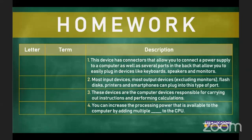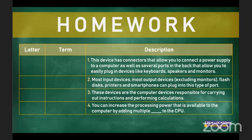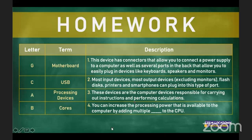Number 3: these devices are computer devices responsible for carrying out instructions and performing calculations. I just went through this at the beginning of the lesson — they would be processing devices. The answer is A, processing devices. Number 4: you can increase the processing power available to the computer by adding multiple cores to the CPU. The answer is B — adding multiple cores increases the processing power.